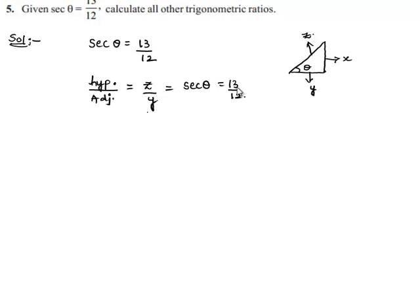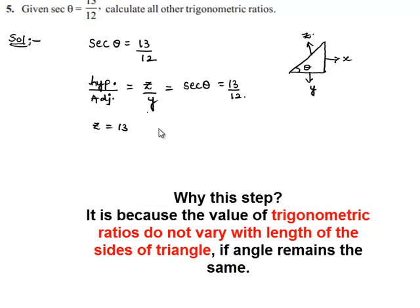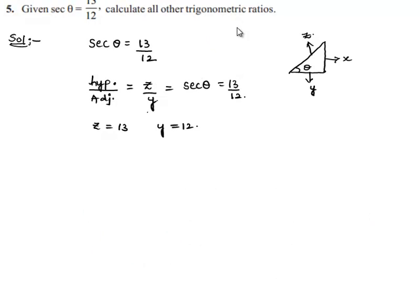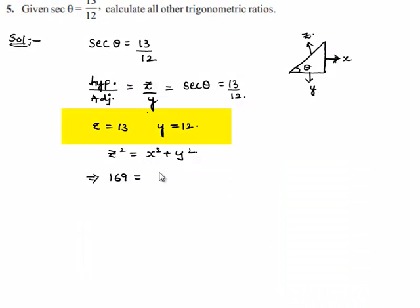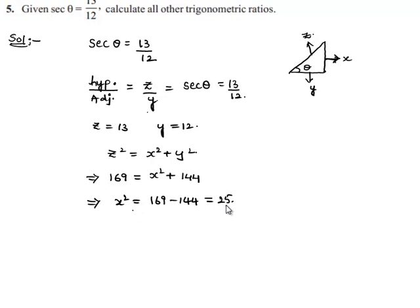Therefore, as z by y is equal to 13 by 12, let us assume that z is equal to 13 and y is equal to 12 in the simplest form. In order to find all other trigonometric ratios, we need to find the other side, x. By applying the Pythagoras theorem: z squared equals x squared plus y squared, so 13 squared, which is 169, equals x squared plus 12 squared, which is 144. Therefore x squared equals 169 minus 144, which is 25, giving x equals 5.